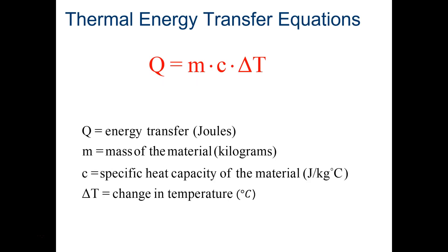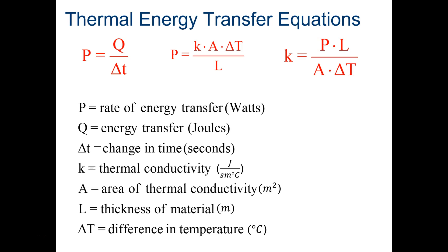You need to write down this equation, along with the variables and units. Units are a big part of this. We have Q, energy transfer in joules. M is the mass of material in kilograms. C is the specific heat capacity of the material, joule per kilogram degree Celsius. And then delta T, that's capital T, is the change of temperature in degrees Celsius. So we have Q equals MC delta T. I would at least jot down the first two equations on the left for P. P is the rate of energy transfer in watts. Q is energy transfer in joules. Delta t, lowercase t here, is the change in time in seconds. K is thermal conductivity in joule per second meter degree Celsius. A is area thermal conductivity, meter squared. L is thickness of material in meters. And delta capital T is difference in temperature.